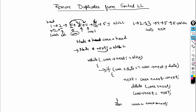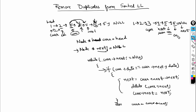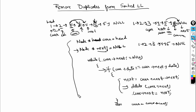Continuing the trace: current's data is not equal to current's next data, so current moves to 4, then to the first 5. Now current's next is not null, so we check: current's data equals current's next data (both 5). We do next = current.next.next (which is null), delete current.next (the duplicate 5), and set current.next = next (null). The final list is 1, 2, 3, 4, 5 with null — all duplicates removed.